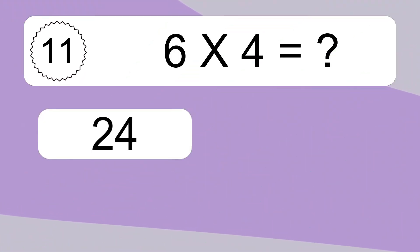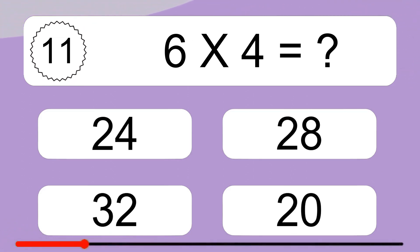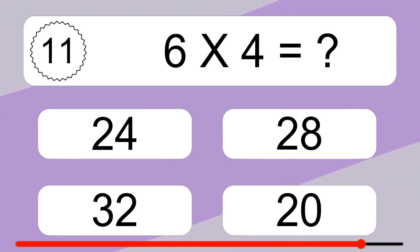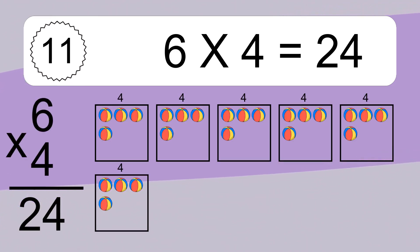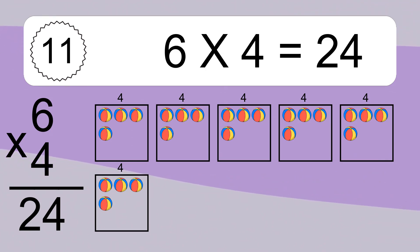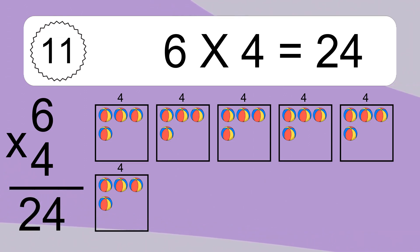6 times 4 equals what? 6 times 4 equals 24. We have 6 boxes and each box has 4 colorful balls inside. If you count all the balls in all the boxes together, you will have 6 times 4 balls. This equals 24 balls.